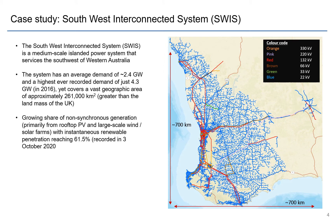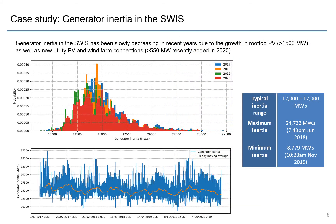In recent years there's been a growing share of non-synchronous generation in the SWIS, primarily from rooftop PV and large-scale wind and solar farms. We recently hit an instantaneous renewable penetration of 61.5% in October, and more than 550 megawatts of capacity has been added in this year alone.